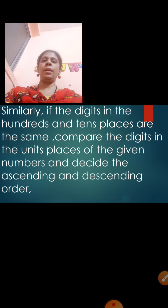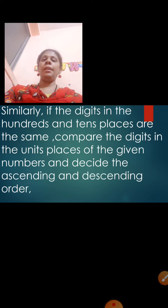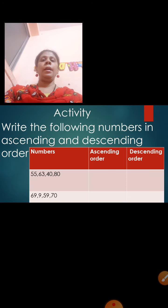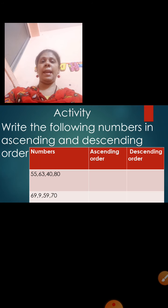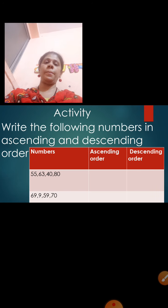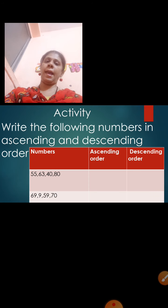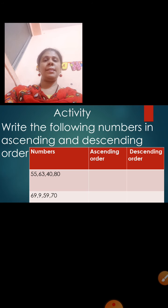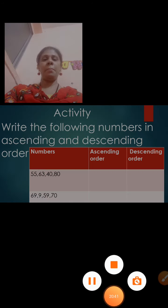Similarly, if the digits in the hundreds and tens places are the same, compare the digits in the units place to decide the ascending and descending order. Here is an activity for you: write the following numbers in ascending and descending order — 55, 63, 40, and 80; and also 69, 9, 59, and 70. Till then, do practice, keep learning. See you in the next session. Bye!